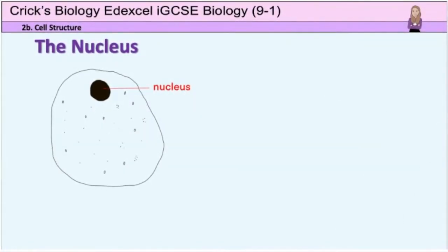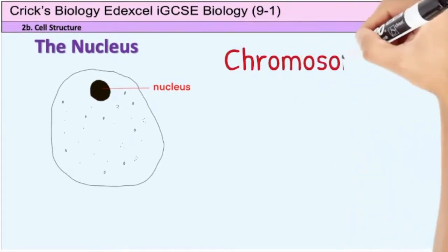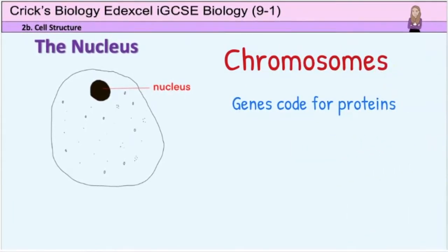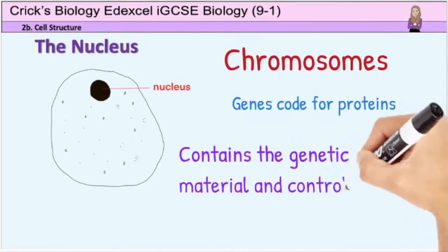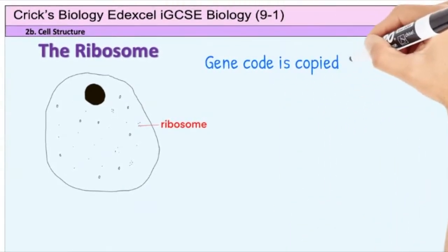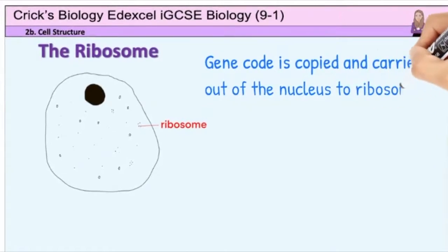Now we move on to a relatively large organelle, the nucleus. This contains the genetic material, which is made up of long strands of DNA called chromosomes carrying the genes. Your genes are what make you who you are. Genes code for proteins and it is these proteins which control the activity of the cell. In summary, the nucleus contains the genetic material and controls the activities of the cell. The chromosomes stay inside the nucleus but the code on the genes can be copied and carried out of the nucleus for the proteins to be made by the ribosomes.